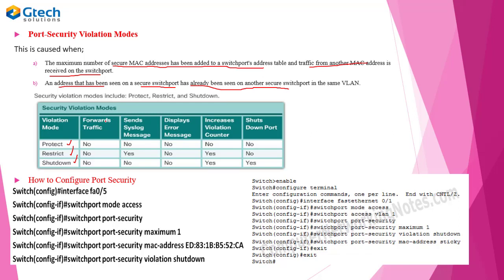Let's understand the violation modes across a comparison table. None of the three modes — protect, restrict, or shutdown — will forward unauthorized traffic. For syslog messages: protect does not send them, restrict does send them, but shutdown does not. For the violation counter: protect does not increment it, while both restrict and shutdown do. For shutting down the port: protect and restrict will not shut down the port, but shutdown will — putting the port into a shutdown state whenever an unauthorized user accesses it.